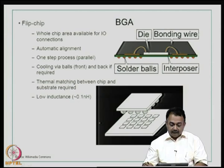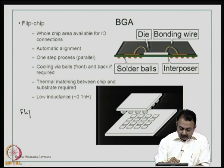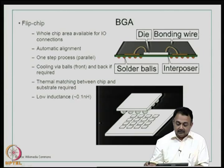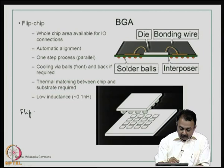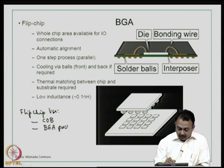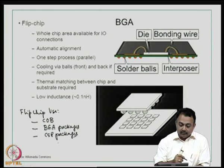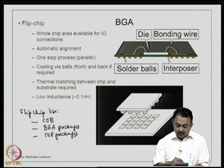One application can be as a chip on board directly onto a substrate, it can be used in the manufacture of BGA packages, or it can be used in the manufacture of CSP packages. The whole chip area is available for I/O connections — that is how the density increases. Automatic alignment and it is a one-step process. I want to explain to you what automatic alignment means.